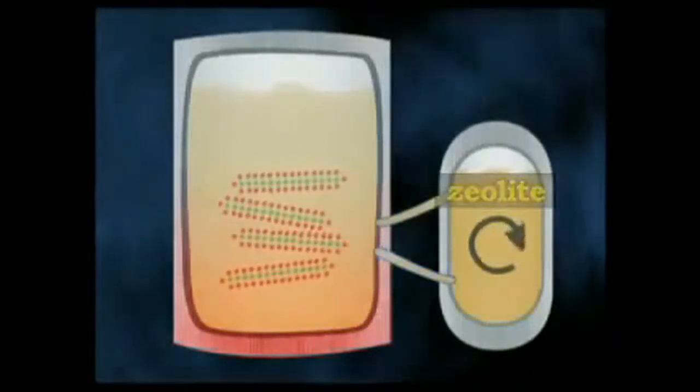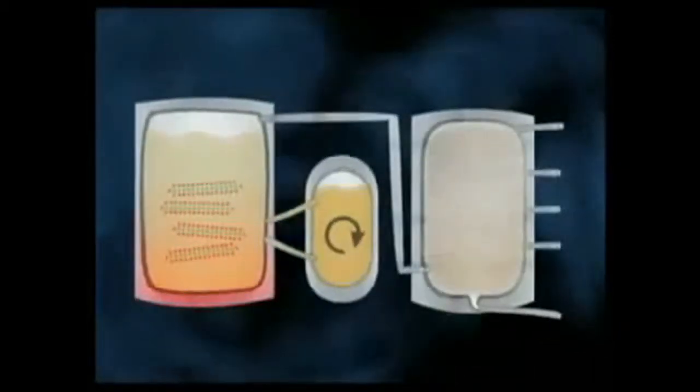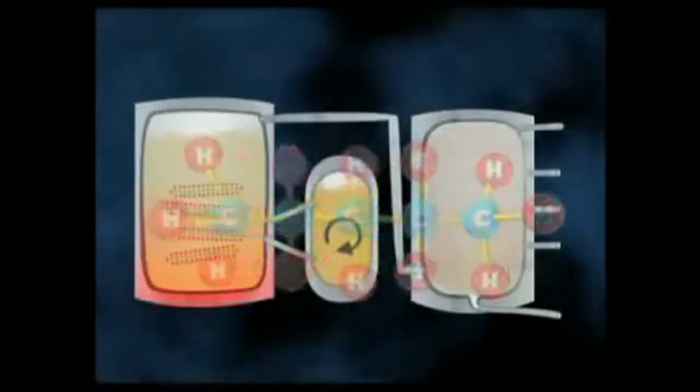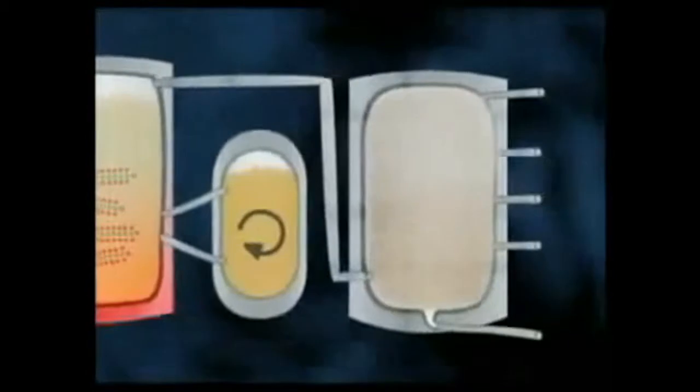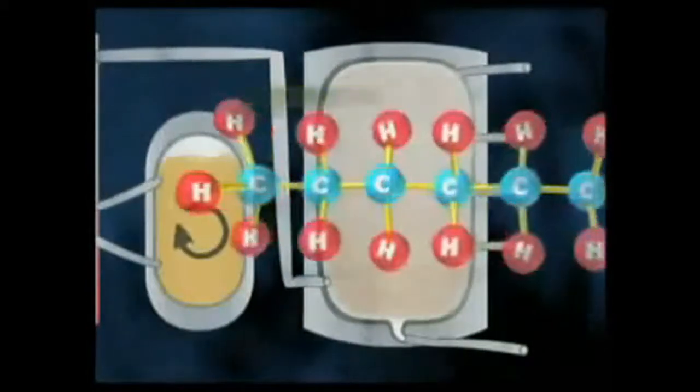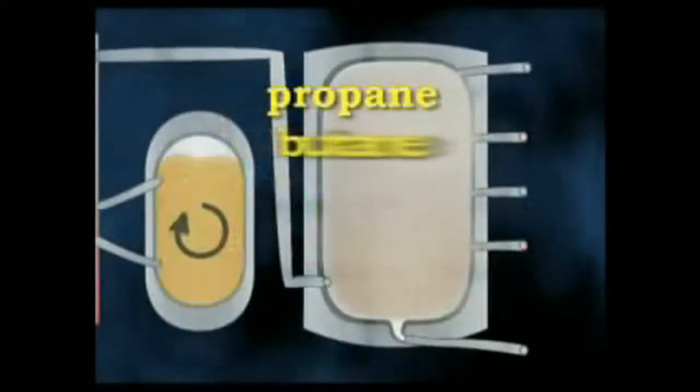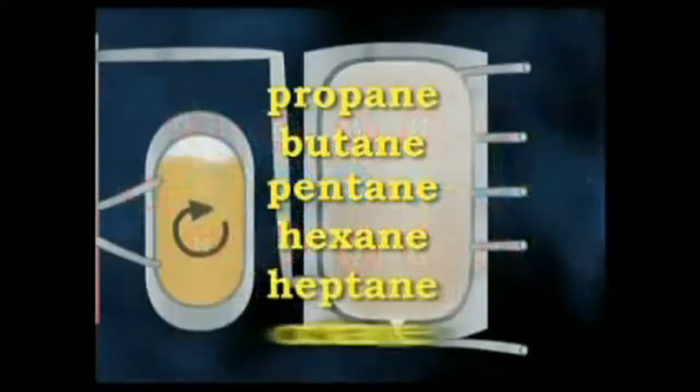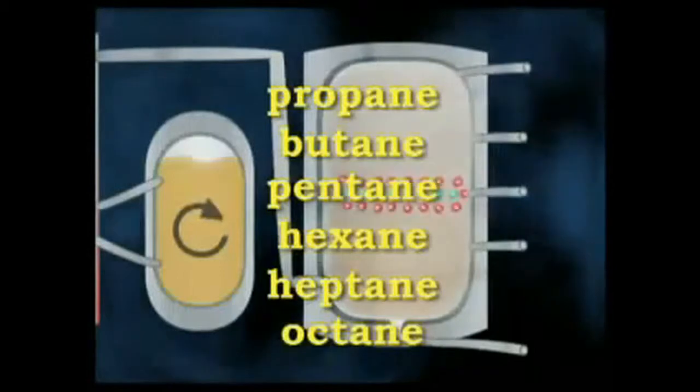Catalytic cracking is the major source of hydrocarbons with 5 to 10 carbon atoms in the chain. The molecules most formed are the smaller alkanes used in petrol, such as propane, butane, pentane, hexane, heptane and octane, the components of liquid petroleum gas.